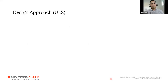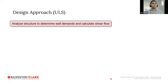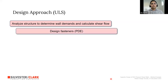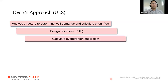The ULS design approach begins by assuming a building period and ductility, analyzing the structure, and apportioning storey shear to individual walls. Shear flow — the shear demand per wall divided by its length in kN/m — is then used to size the fasteners (PDEs), deciding on fastener size and spacing. From that, the maximum overstrength that can be developed in the nails is calculated.